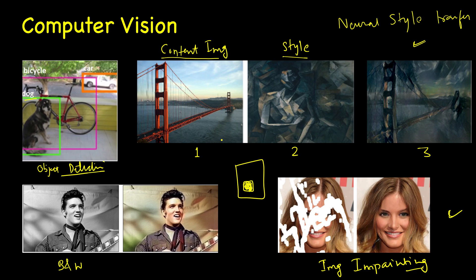There are many more applications — you can even draw a sketch and a deep neural network may convert it into a realistic-looking image. If you draw the Golden Gate Bridge, the network understands what it is and tries to convert that sketch into a realistic image. Similarly, if you draw trees or mountains, the network can convert them in real time into realistic color images filled with natural texture and colors.